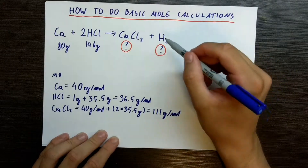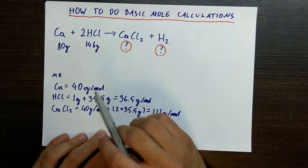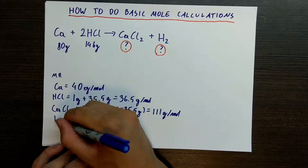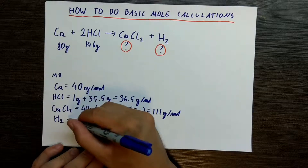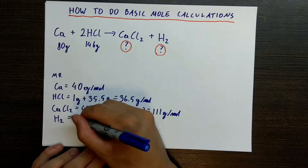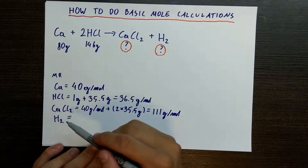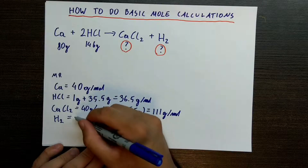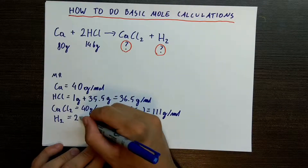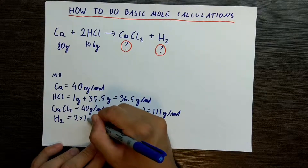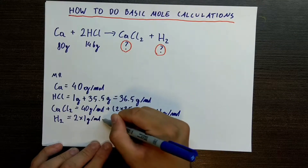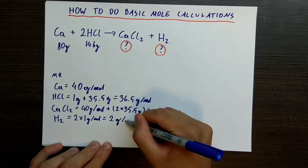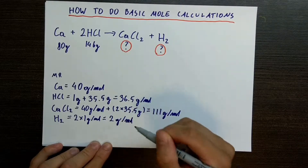The final one we need to consider is hydrogen. In its gas form, it appears as H₂. Each hydrogen atom is 1 gram per mole, so 2 times 1 gram per mole gives us 2 grams per mole.